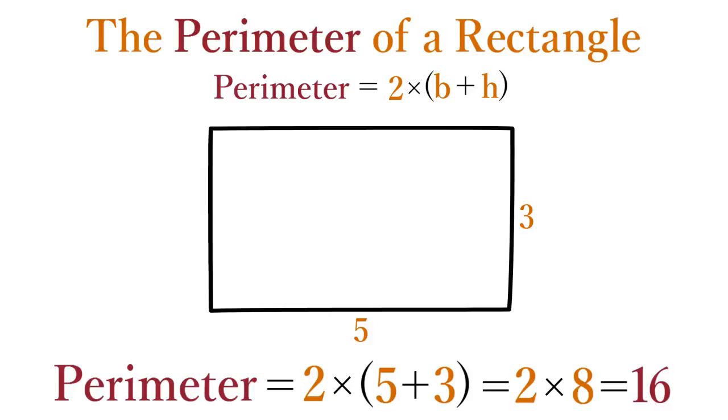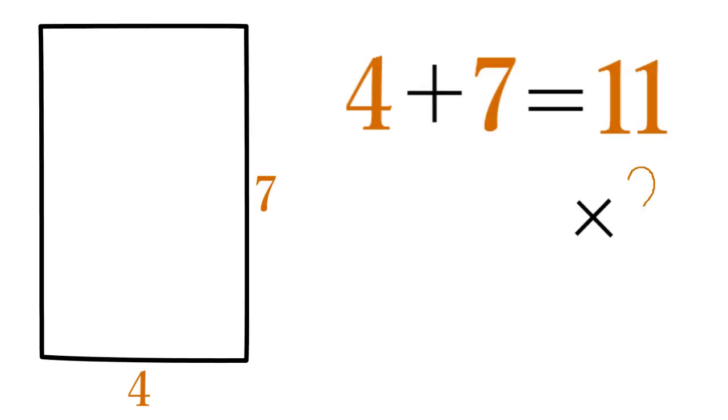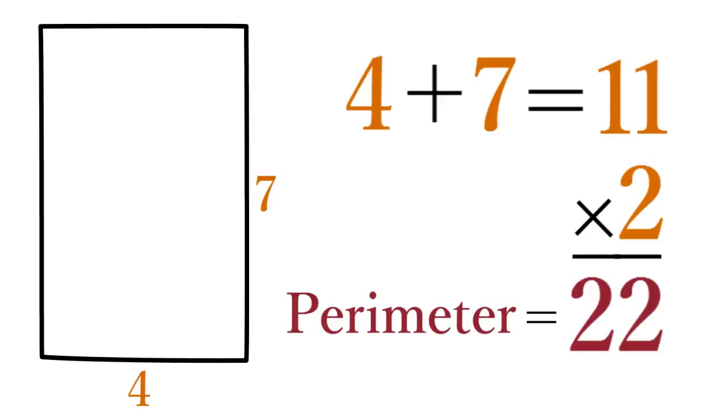The quickest way to calculate perimeter in your head is simply to add the base plus the height and then multiply this result by two. So if a rectangle has a base of four and a height of seven, add four plus seven equals eleven, times two equals twenty-two. So the perimeter is twenty-two.